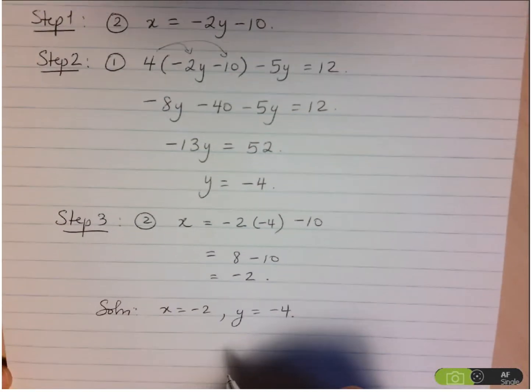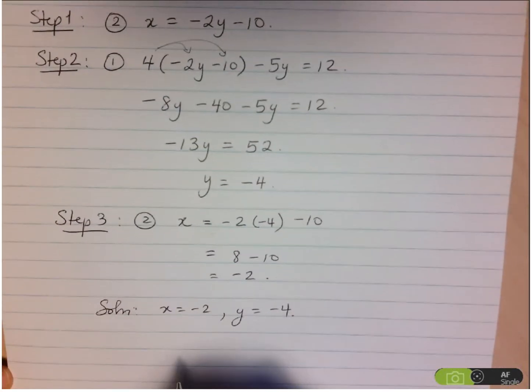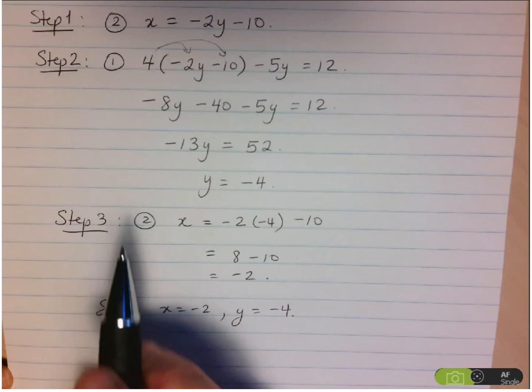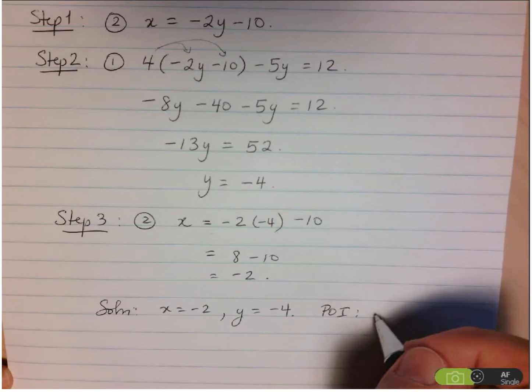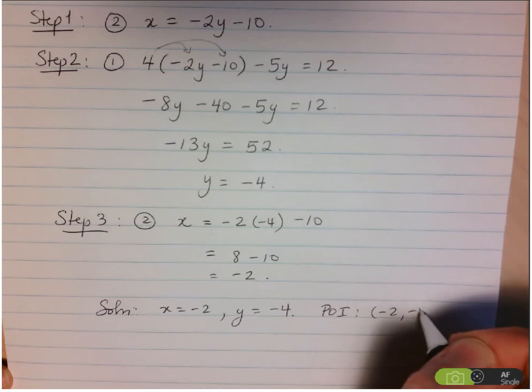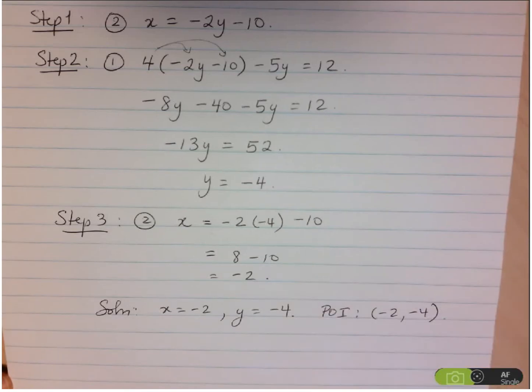Now, if I were being asked to give the point of intersection between the two lines, I should be giving that as a point. So the point of intersection here would just be negative 2, negative 4. And that's how we can solve a system of equations using substitution.